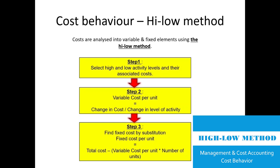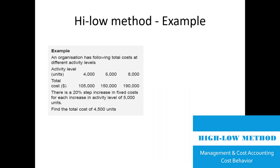Step three: find fixed cost by substitution. The formula is fixed cost equals total cost minus variable cost per unit times number of units. These three steps give us variable cost and fixed cost. For example: an organization has costs at activity levels of four thousand, six thousand, and eight thousand units, with total costs of one hundred, one hundred fifty, and one hundred ninety thousand. There is a twenty percent step increase in fixed cost for each increase in activity level of five thousand.